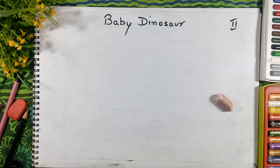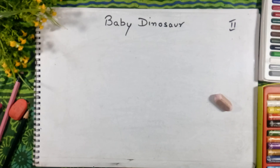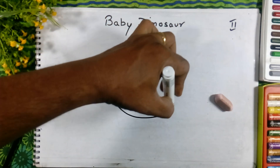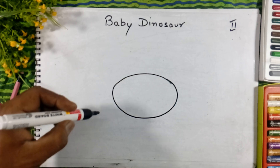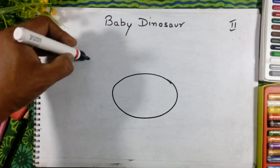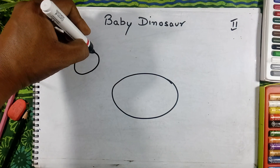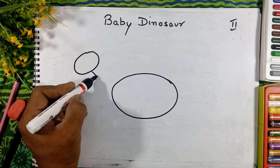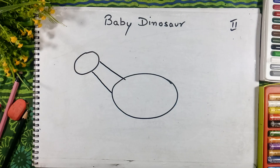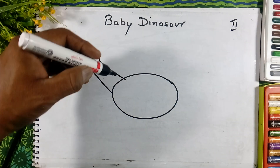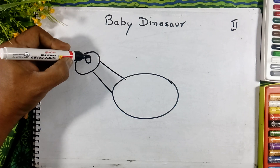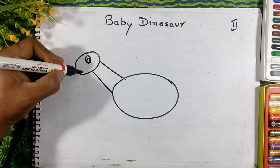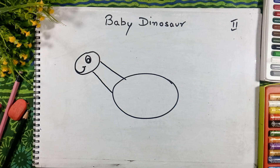We'll make a baby dinosaur with the help of oval shapes. First we will draw the oval shape here in the center, and a copy of that oval. Then we will draw the oval shape here for the head and join the lines like this.